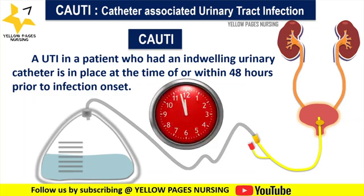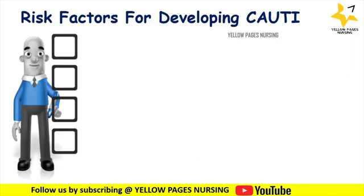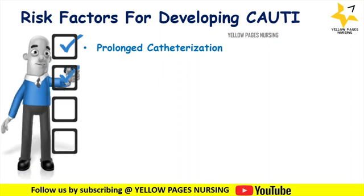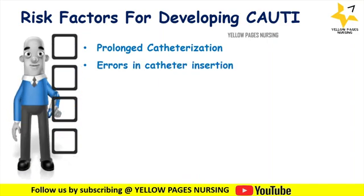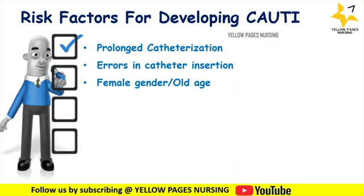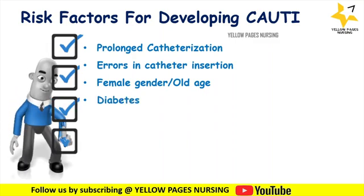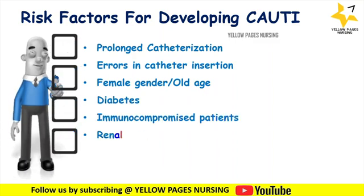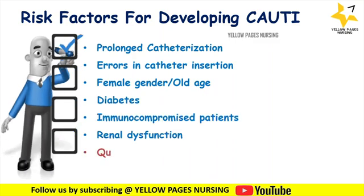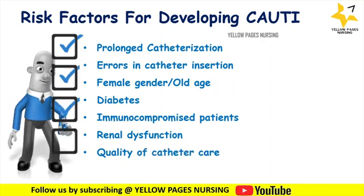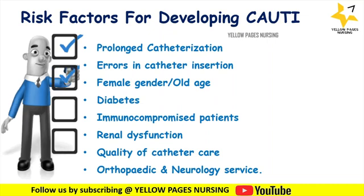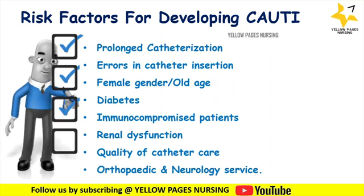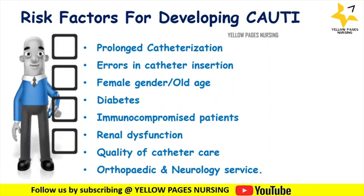Risk factors for developing catheter-associated urinary tract infection include: prolonged catheterization, errors in catheter insertion, female gender, old age, diabetes, immunocompromised patients, renal dysfunction, quality of catheter care, and orthopedic and neurology service.